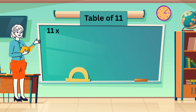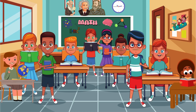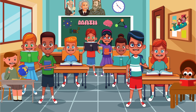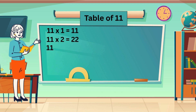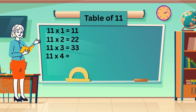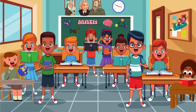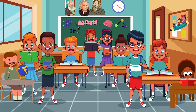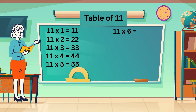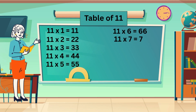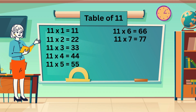Table of 11. 11 ones are 11. 11 twos are 22. 11 threes are 33. 11 fours are 44. 11 fives are 55. 11 sixes are 66. 11 sevens are 77.